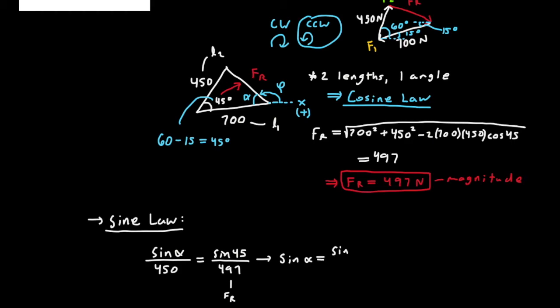And so isolating sine alpha, we move the 450 to the other side of the equation. And solving for alpha, we are going to get the inverse sine of the right side. So the right side equals 0.6402.